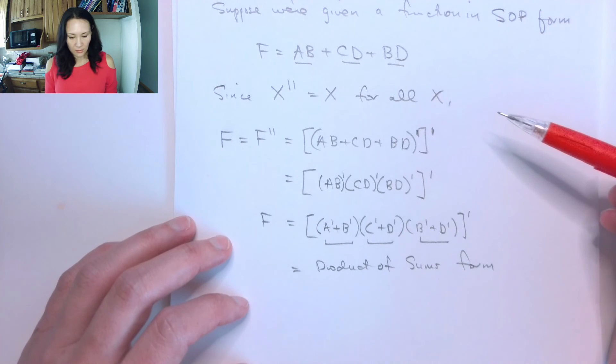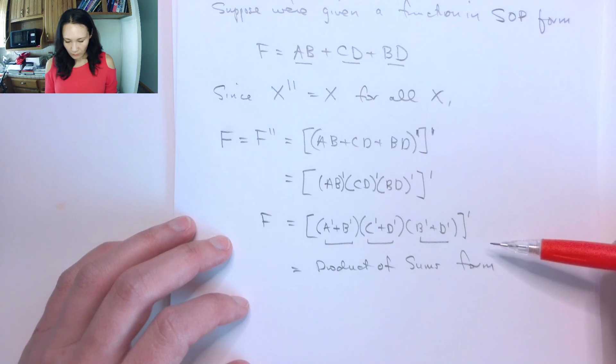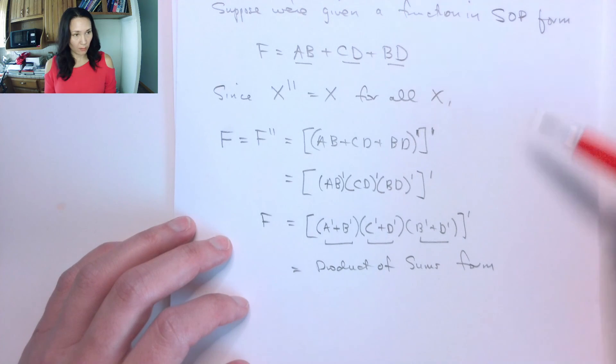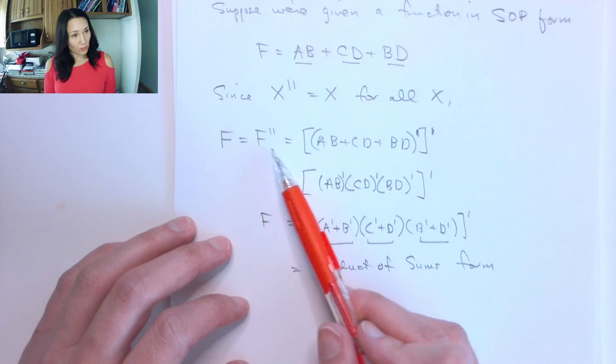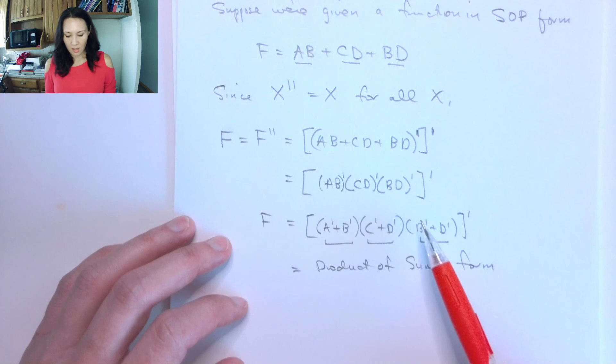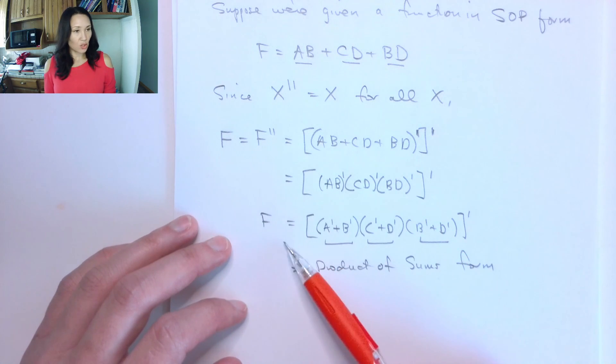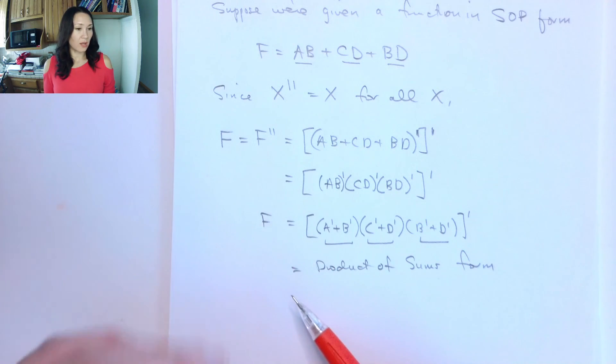And also, if you're asked to go between sum of products form and product of sums form, the way we do that is you can do this little double complement trick and it doesn't change the logic of your function at all.